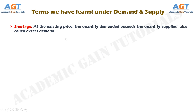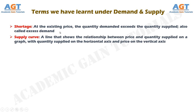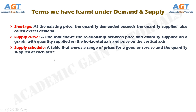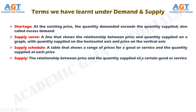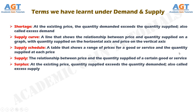Shortage is a situation in which at the existing price, the quantity demanded exceeds the quantity supplied, also called excess demand. The supply curve is a line showing the relationship between price and quantity supplied, with quantity supplied on the horizontal axis and price on the vertical axis. The supply schedule is a table showing a range of prices and the quantity supplied at each price. Supply is the relationship between price and the quantity supplied of a certain good or service. Surplus is a situation in which at the existing price, quantity supplied exceeds quantity demanded, also called excess supply.